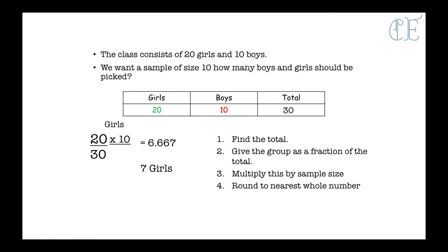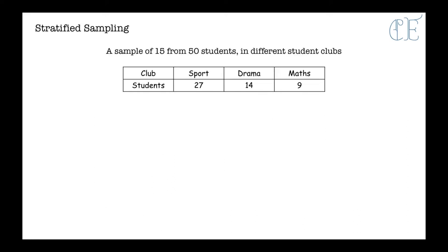Now for the boys we write the fraction of the boys out of the total. So the boys is 10 out of 30. 10 out of 30 times by 10 gives us 3.33 recurring which is a total of 3 boys. So on the previous slide we looked at it as a percentage, and on this slide we looked at it as just a number. So let's have a look at another example.